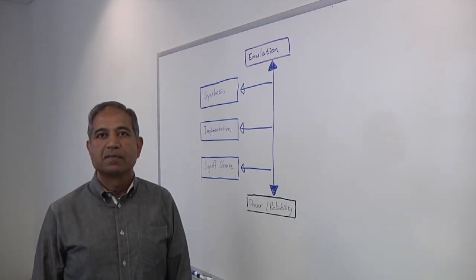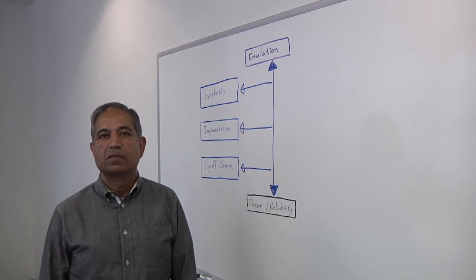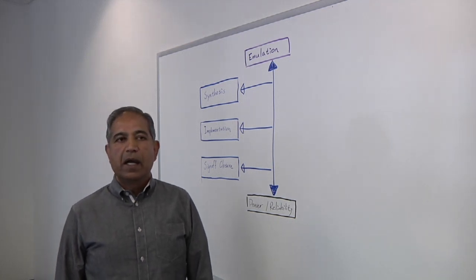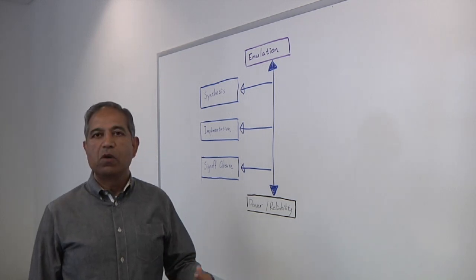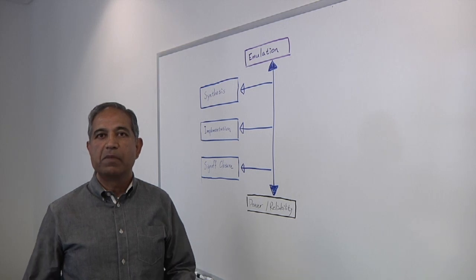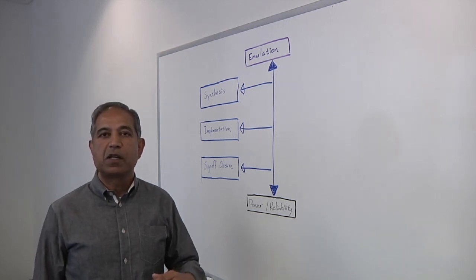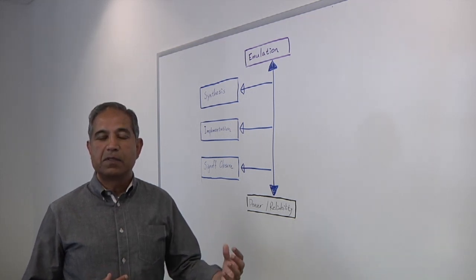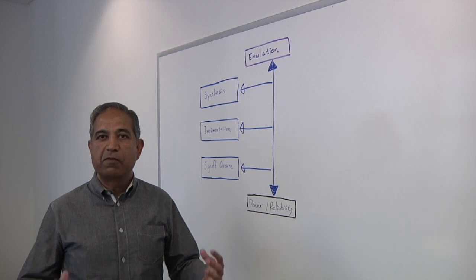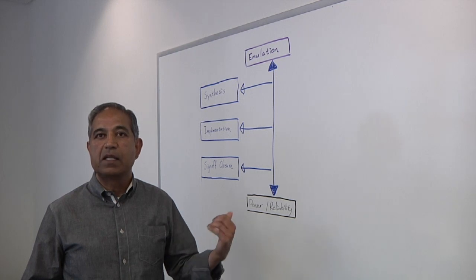So as we get down into 7-5 nanometers, what's the difference there versus say at 16-14? What else do you have to think about? At 16 and higher, there were no physical effects that had to be modeled for power and reliability. Going down into 7 and 5 nanometers, you need to start being aware of the context of the cell, the advanced timing effects such as waveform propagation and shaping, and also signal EM effects which you had not seen before at 16 and 20 nanometers.